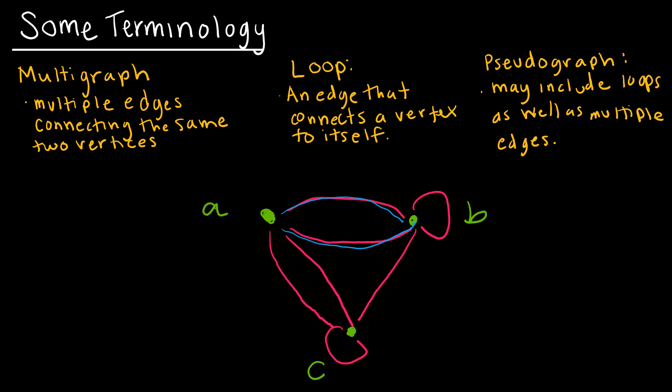A loop, however, again we talked about that a little bit, a loop connects a vertex to itself. A multigraph actually would not contain any of those loops, but a pseudograph is what I have pictured here, which contains both multiple edges and loops. So it could include one or both.